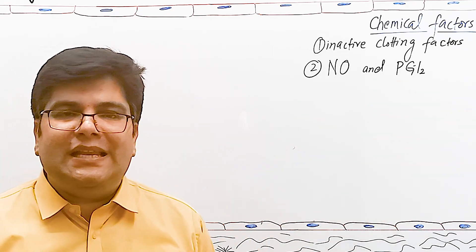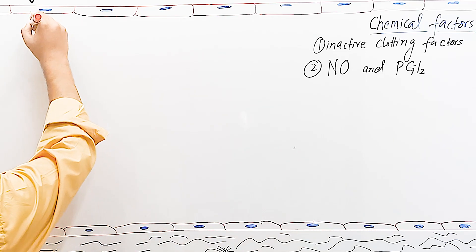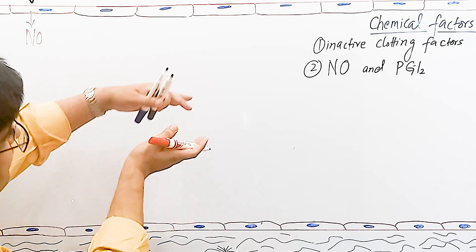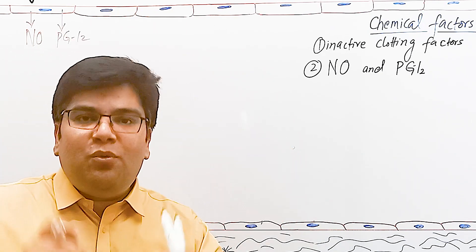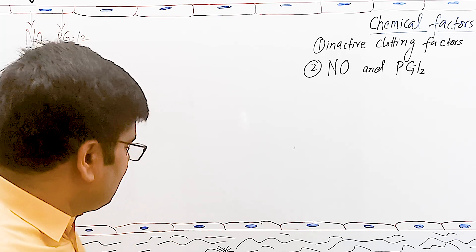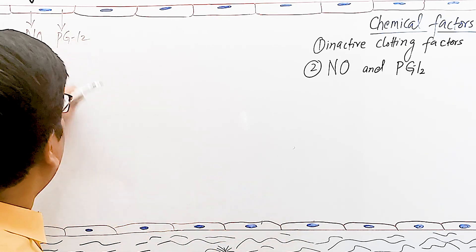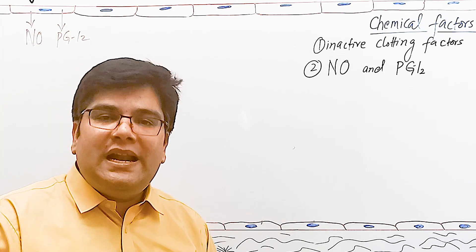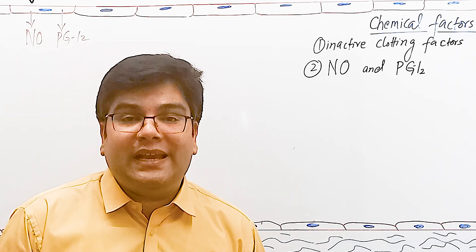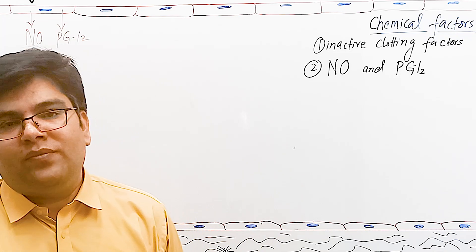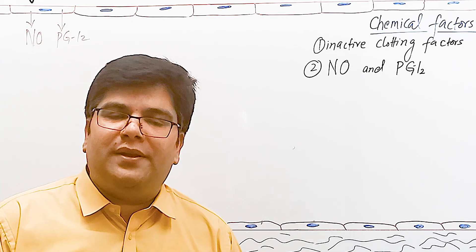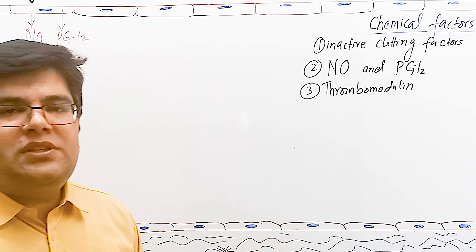The normal intact endothelium produces two very important chemicals: nitric oxide and PGI2 (prostaglandin I2), also called prostacycline. These are very important vasodilators — when produced from healthy endothelium they cause dilation of the blood vessel. Another important function is that they prevent the aggregation of platelets. Whenever there is injury to the endothelial lining, production of nitric oxide and prostaglandin I2 is decreased, contributing to blood clotting. Prostacycline is a local hormone produced from arachidonic acid released from phospholipids of the cell membrane.